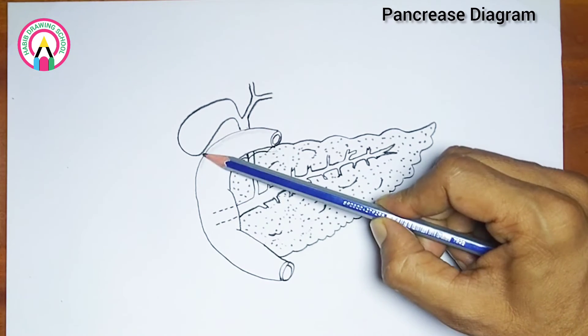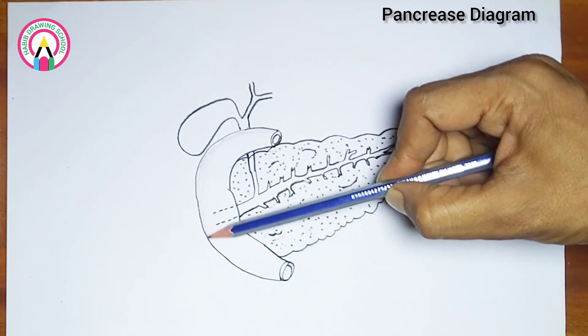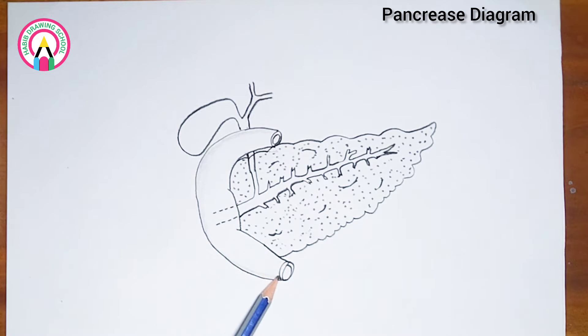Two: exocrine function - the pancreas produces digestive enzymes that are released into the small intestine to aid in digestion.